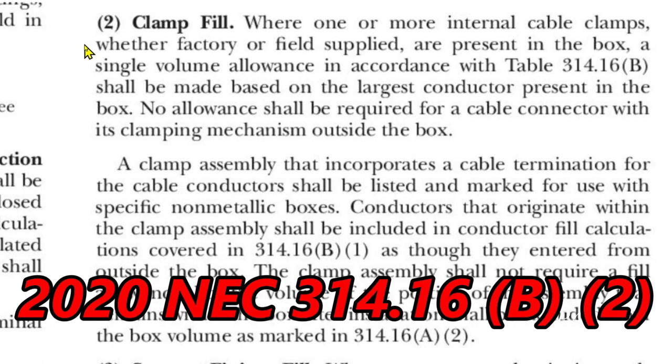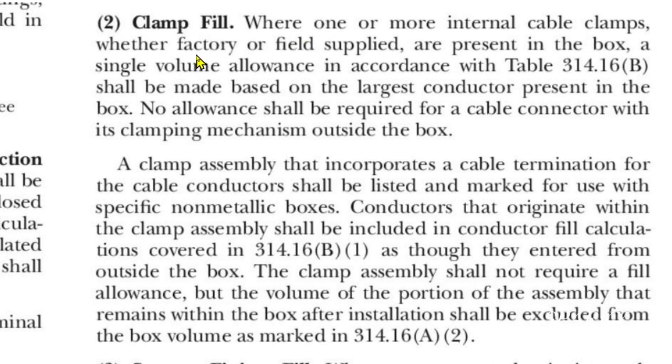Here we are at 2020 NEC 314.16B2 clamp fill. Where one or more internal cable clamps, whether factory or field supplied, are present in the box. A single volume allowance in accordance with table 314.16B shall be made based on the largest conductor present in the box.